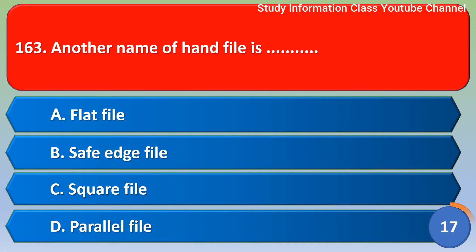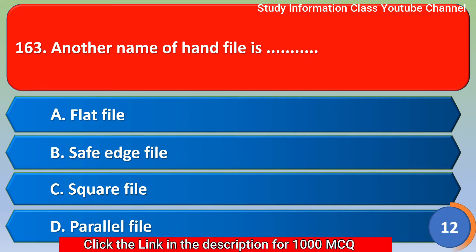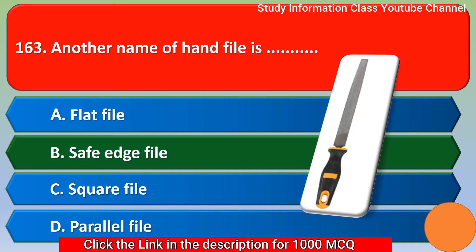Next question: another name of an and file is — Option A: flat file. Option B: safe edge file. Option C: square file. Option D: parallel file. The correct answer is Option B — safe edge file.